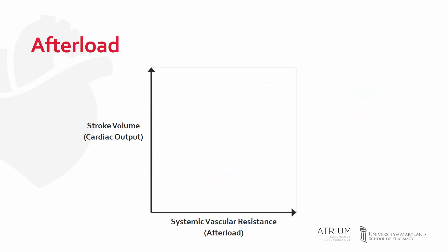The relationship between afterload and stroke volume can be represented by the following graph. The x-axis represents SVR, or afterload, and the y-axis represents stroke volume, or cardiac output. As you can see, as SVR increases, stroke volume decreases slightly, leading to a decrease in cardiac output.